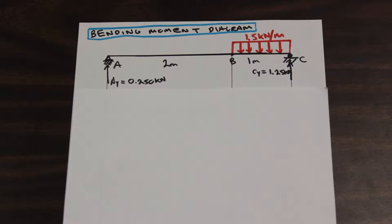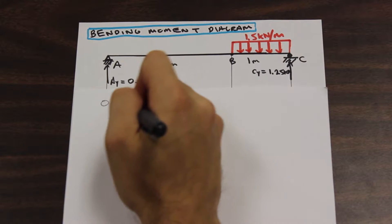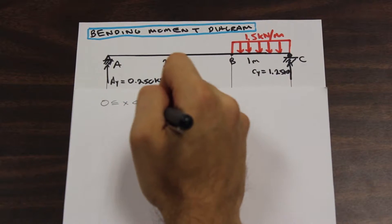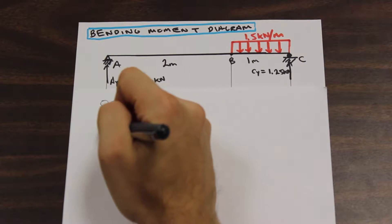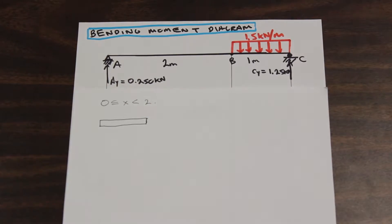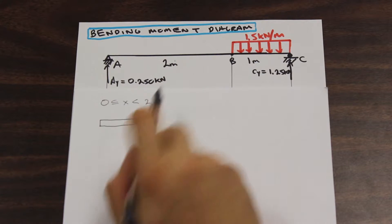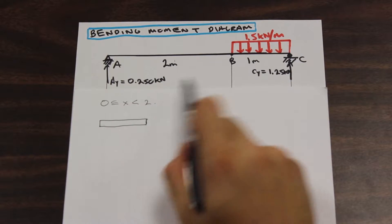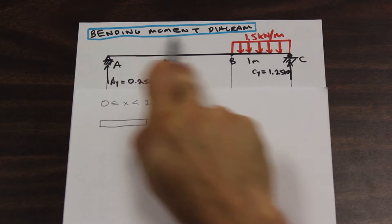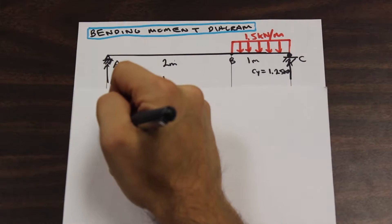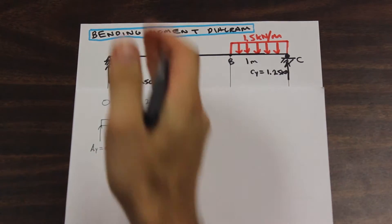Let's start with section AB. We are going to start with section from 0 — where x is greater than 0 and less than 2 — so anywhere before here. We're going to draw a little shape representing the section of the beam that we've cut, moved down here to represent it visually. I've written the reactions from the last video here: Ay is 0.250 kilonewtons and Cy is 1.25 kilonewtons. In the first section of the beam, we really only have Ay, so we label that.